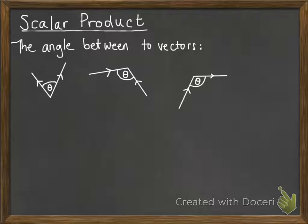And the third one has neither. They're not coming towards the same point or away from the same point, and that's the important part. They have to converge to a point or they have to diverge from a point. That third one is not the correct way to define the angle between two vectors.